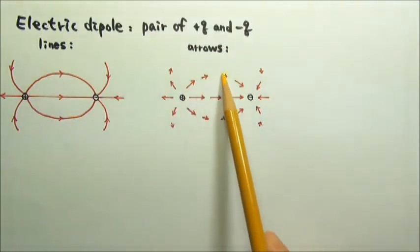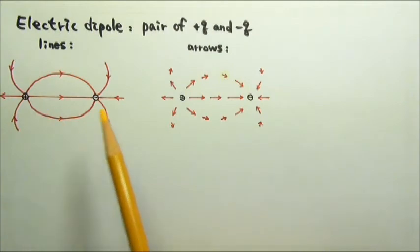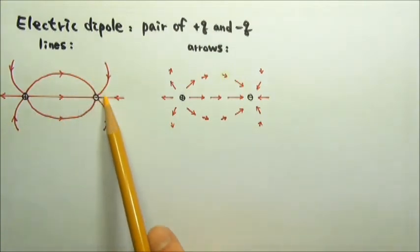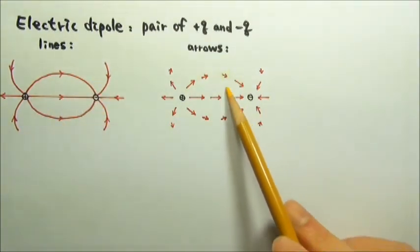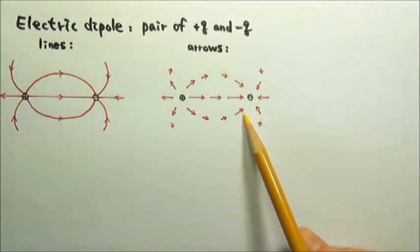The arrows will be in the same direction as the field lines. And where the lines are denser, the field is stronger and therefore the arrows longer.